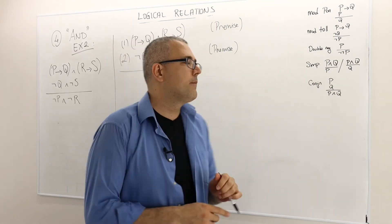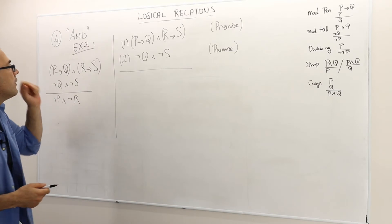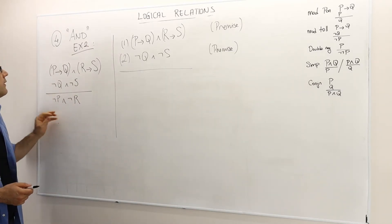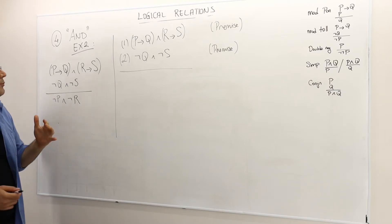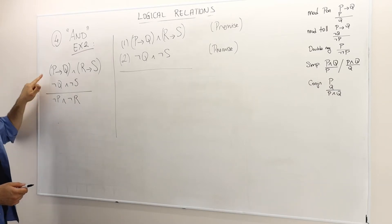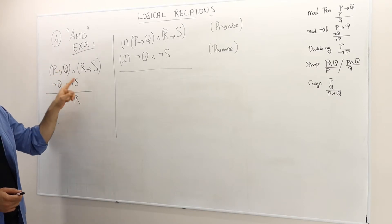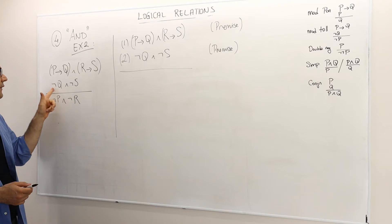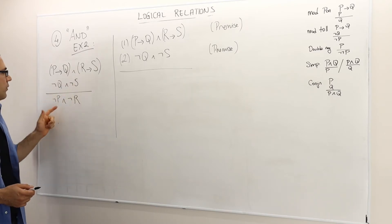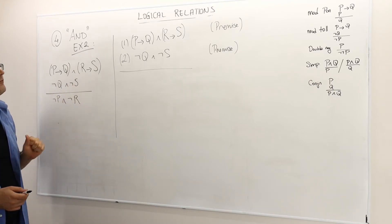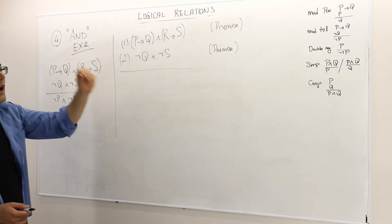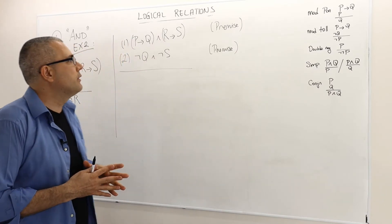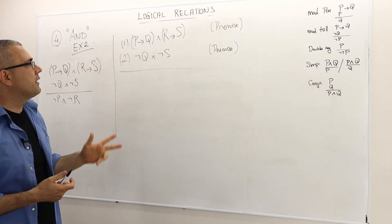So I have another example — Example 2. Prove that this argument is valid and use direct proof. I already wrote down and summarized all the rules that we learned, so I'm going to use those to prove this.